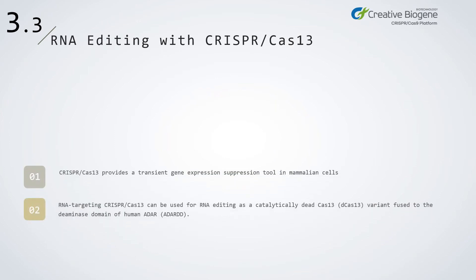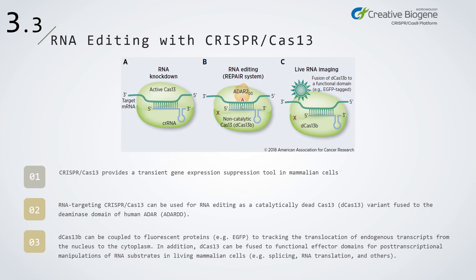CRISPR-Cas13 enables transient gene expression suppression in mammalian cells. An RNA-targeting CRISPR-Cas13 can be used for RNA editing as a catalytically dead Cas13 (dCas13) variant fused to a deaminase domain of human ADAR or ADAR2. Moreover, dCas13b can be coupled to fluorescent proteins such as EGFP to track the translocation of endogenous transcripts from the nucleus to the cytoplasm. In addition, dCas13b can be fused to functional effector domains for post-transcriptional manipulations of RNA substrates in living mammalian cells, such as splicing and RNA translation.